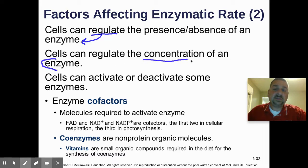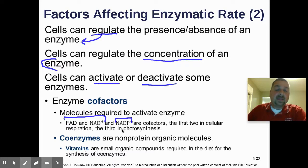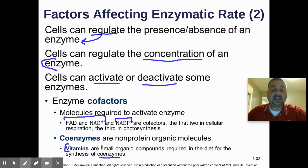Cells can also regulate enzymes through coenzymes and cofactors. If your body needs more of something, it builds more enzyme to produce more product. Cofactors are molecules required to activate an enzyme — examples we'll study this year include FAD, NAD, and NADP+. FAD and NAD are used in cellular respiration as electron carriers; NADP+ is used in photosynthesis. Coenzymes are why you need vitamins in your diet — they are small organic compounds required for the synthesis of coenzymes that help activate certain enzymes.